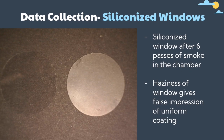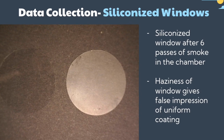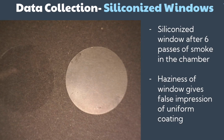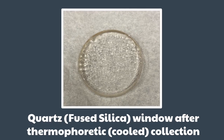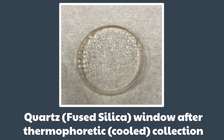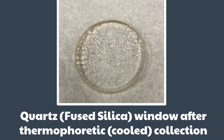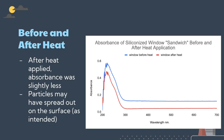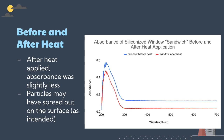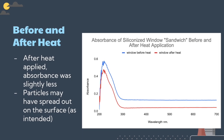The substrates used were fused silica windows and hydrophobic siliconized windows. In addition to passive collection at room temperature, we manipulated the temperature of the window surface at time of collection and post-exposure of the collected samples to organic solvent vapors or heat.